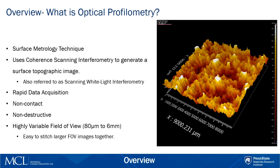To the right, we can see an example of the types of data collected with this method. Here we have a rough titanium surface image that has been generated using a 4x4 array of smaller images, resulting in a 9x9mm field of view.